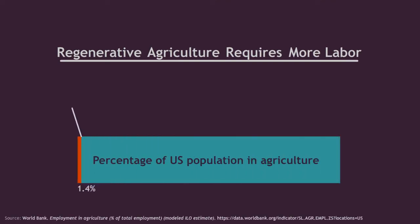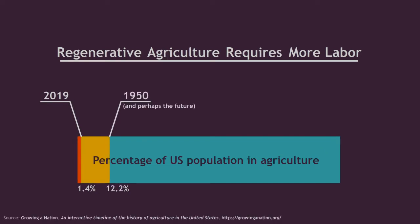In the United States, approximately 1% of the population is directly engaged in farming. That might have to go up to 10%, as it was in 1950. And maybe if you include gardens, maybe go up to 50%.